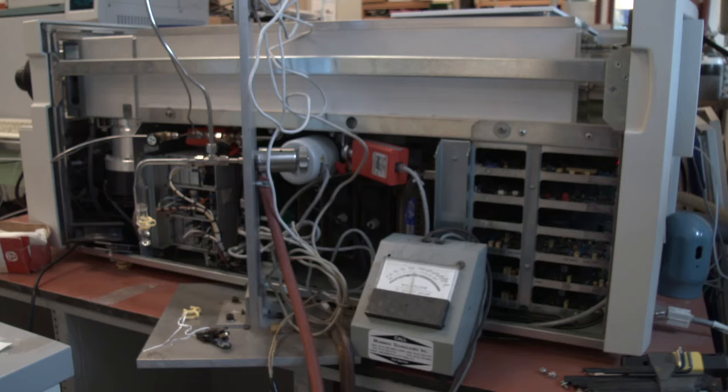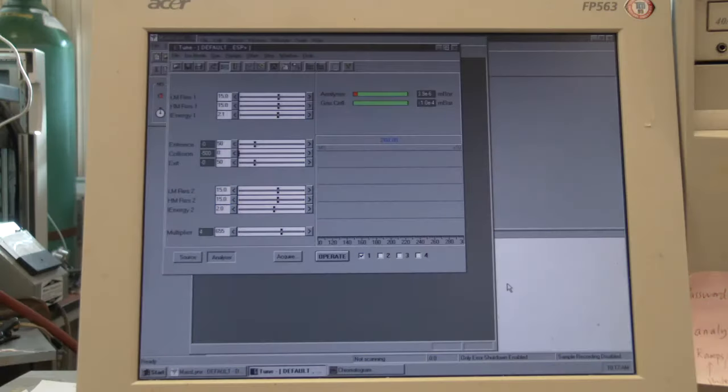In this Waters instrument there are two gauges, a Pirani and a Penning. The Pirani is located in the middle quadrupole, the gas cell, and shows a pressure less than 10 to the minus 4 millibar. This is illustrated in words and color. Green means good vacuum, red bad. Argon gas is added to the gas cell during an MS-MS experiment, raising the pressure to above 10 to the minus 3 millibar. It is important to know the pressure in this region for that purpose.